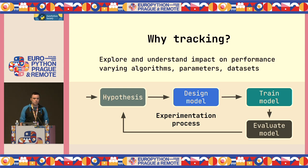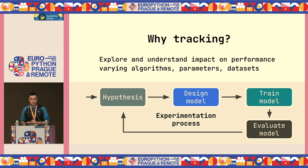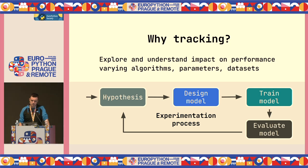As we want to explore and understand what is the impact of changing algorithms, datasets, or parameters, we enter this loop where we have a hypothesis on what could work and potentially improve performance. Then we design our model, we train our model, we tune our parameters, and then we evaluate what we built. Then we might decide to keep repeating the process. This is basically the experimentation process.